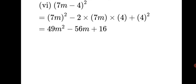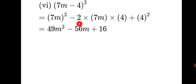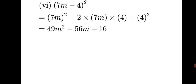Sixth sum: 7m minus 4, the whole square. Using (a−b)² formula: (7m)² − 2×7m×4 + 4². Expanding: 7² = 49, so 49m²; 2×7×4 = 56, giving −56m; and 4² = 16. The answer is 49m² − 56m + 16.